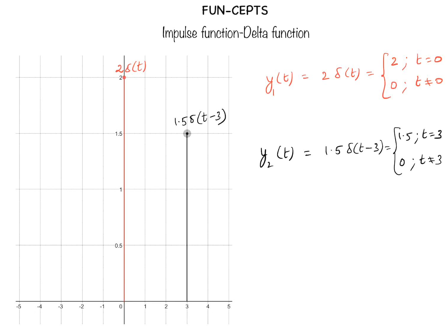If we have multiple impulse functions together constituting a particular signal — for example, taking the red impulse and the black impulse together — we can denote that as y(t) equal to y1(t) plus y2(t), which is simply 2·delta of t plus 1.5·delta of t minus 3. In this way we can add as many impulses as we want to represent different combinations of signals, and we will see in later videos how this is used in the analysis of signals and in studying communication systems.